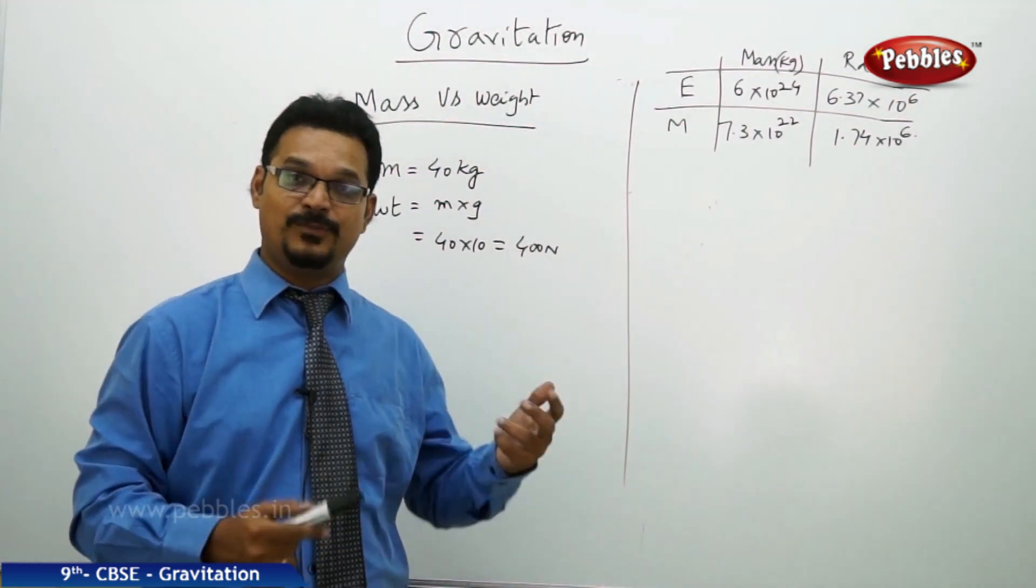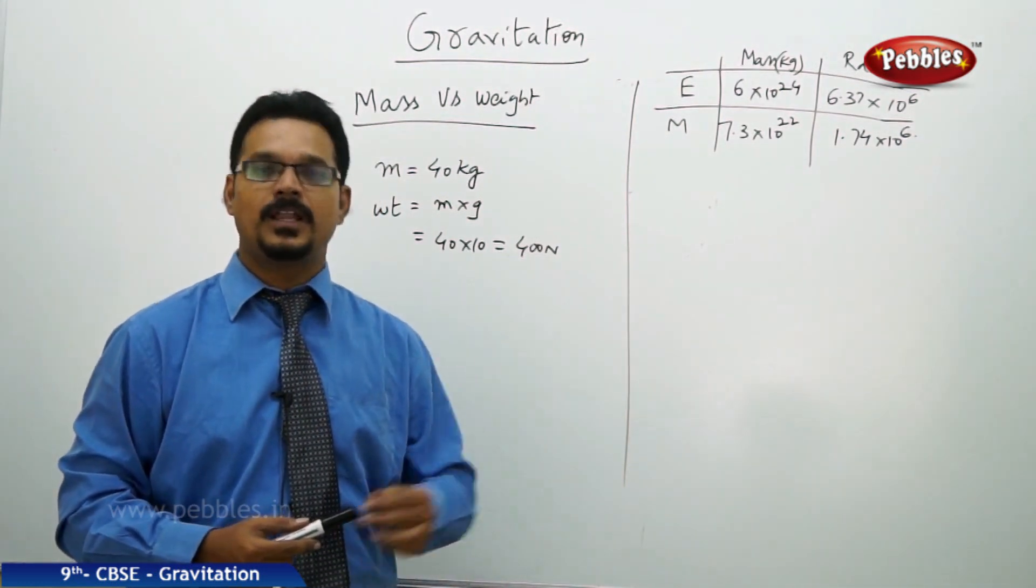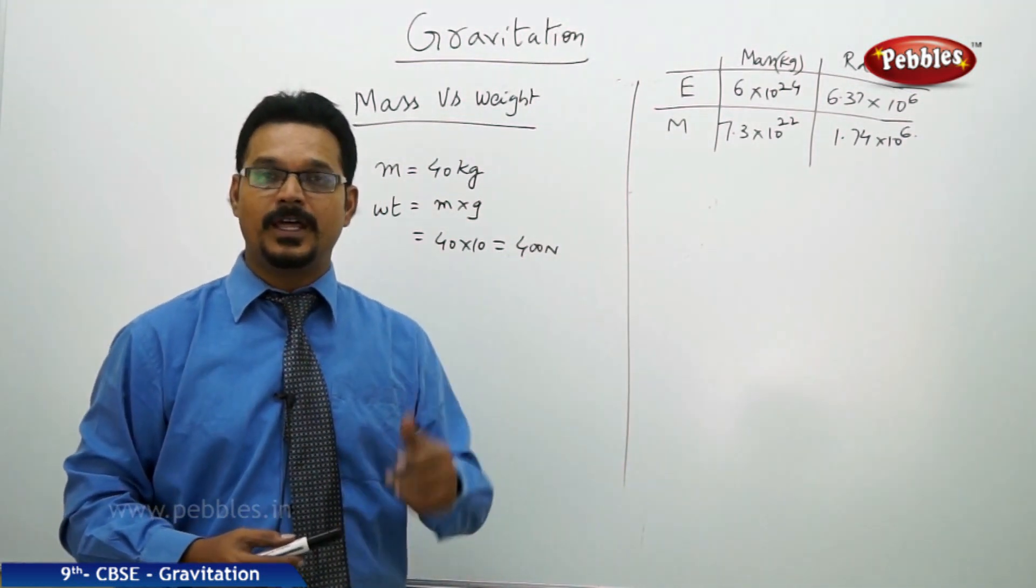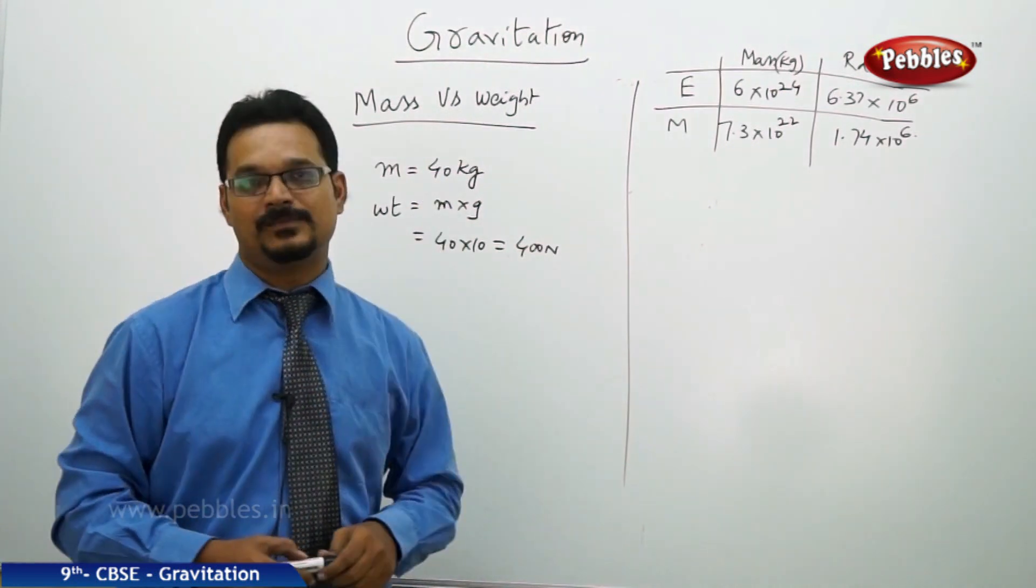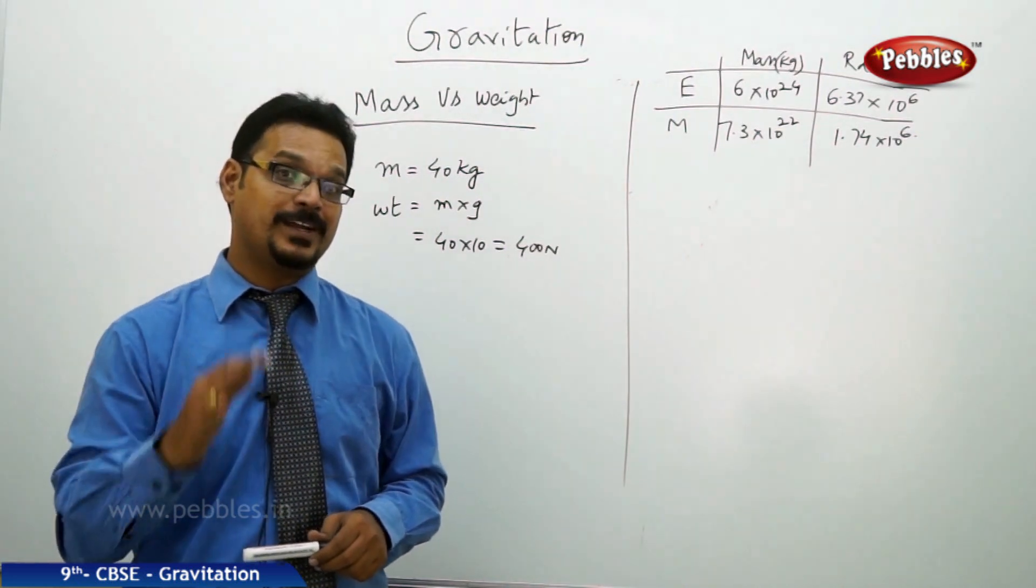But many people don't know. If you say 400 newtons, because all our weighing machines and our conversations are done in forms of kilograms only, that's why even if you say 40 kg weight, it's not a problem, you are correct.